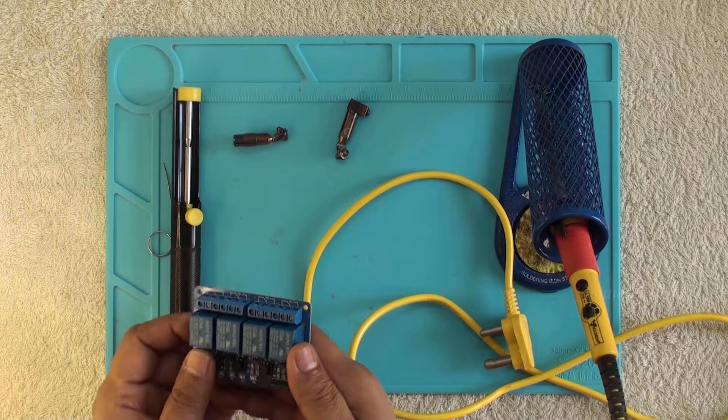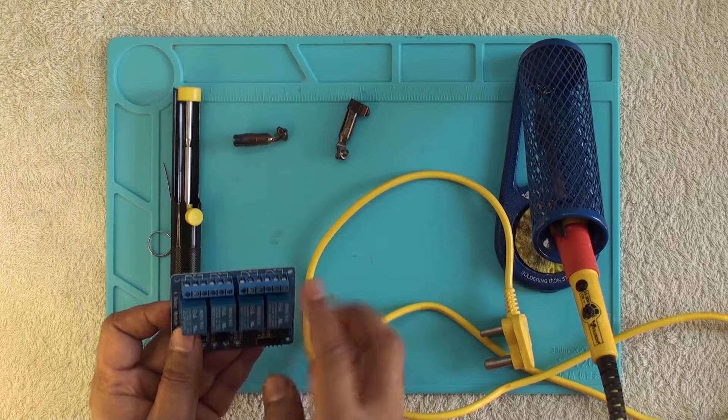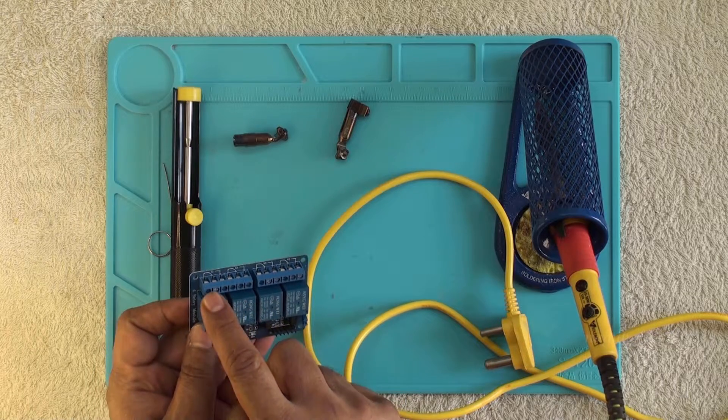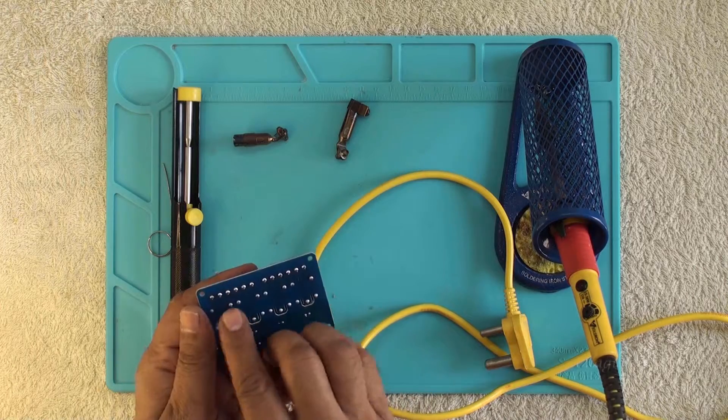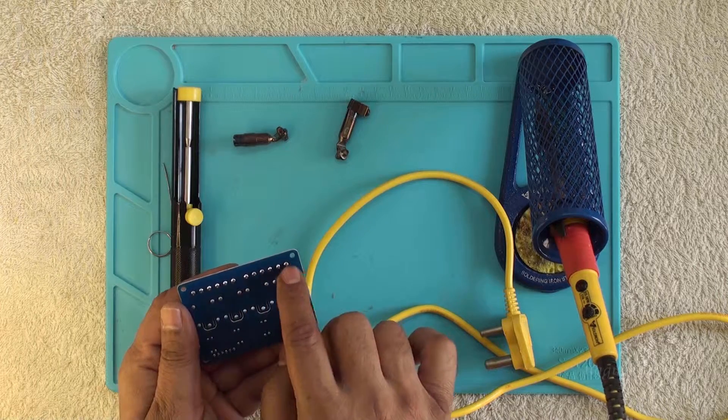This is a 5 volt 4 relay module for our home automation project. We want to remove these connectors to include RC snubber in the circuit. To remove the connectors, we need to de-solder these pins.